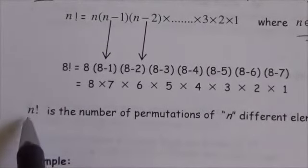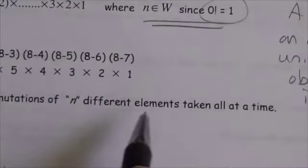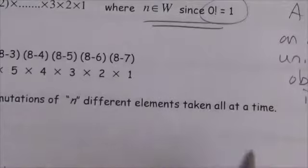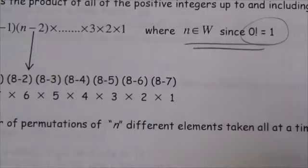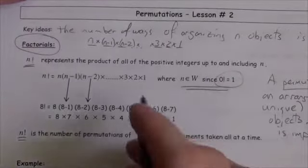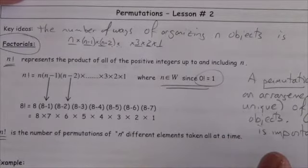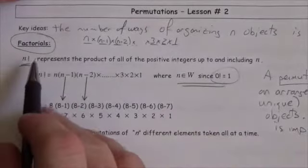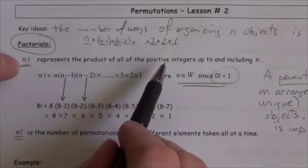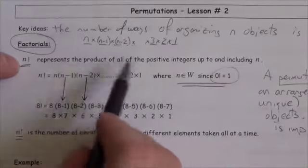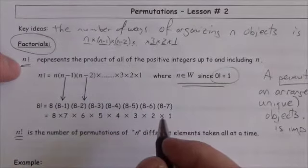So n factorial is therefore the number of permutations of n different elements or objects, if you take them all at once. What we want you to get out of this is what a permutation is — a unique ordering of a set number of objects — and the idea that n factorial is the product of all numbers from n down to one.